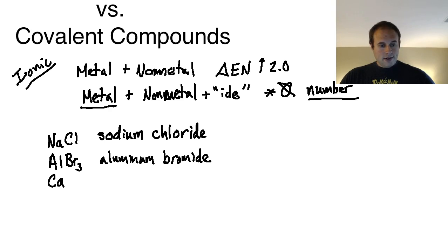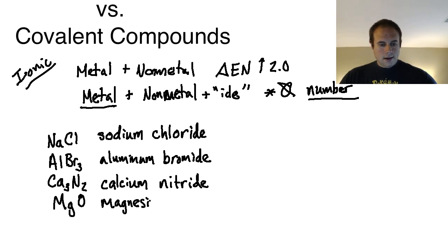I could also have something like Ca3N2, so the name for this: get the metal calcium, and then instead of nitrogen I'm going to use nitride. So nitride is the correct answer for the second part. I could have something like MgO, the metal here is magnesium, and the proper nonmetal is going to be oxide.